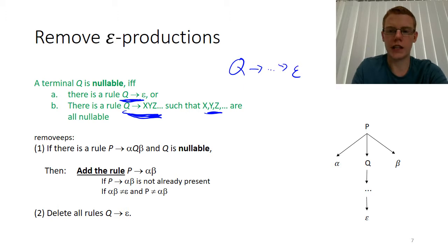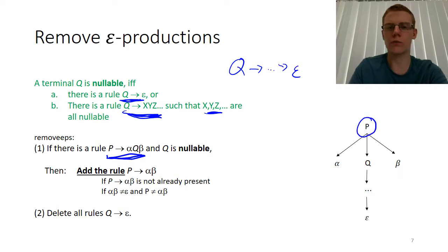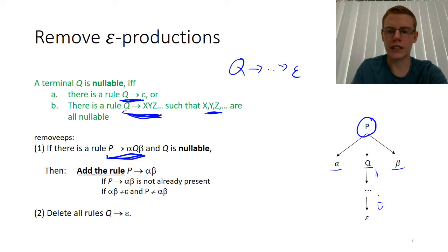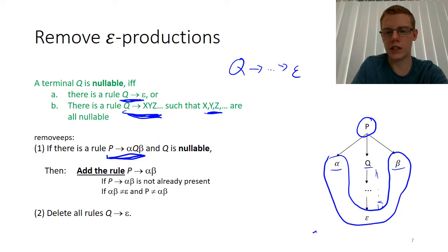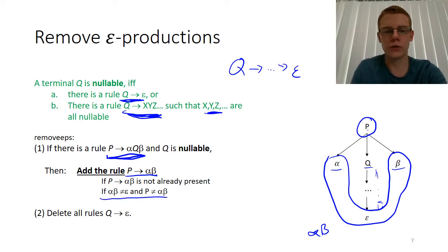First we find all nullable non-terminals. Then for each rule that contains a nullable non-terminal, we add a version of that rule without the nullable non-terminal. The reason: if P can turn into alpha Q beta, and Q is nullable — meaning it can eventually become epsilon — then we effectively have a way to produce just alpha beta, since concatenating the empty string changes nothing. So we add the rule P goes to alpha beta. We also make sure we don't add rules that violate our epsilon constraint or that are already present. Once done, we remove all rules where the right-hand side is epsilon.